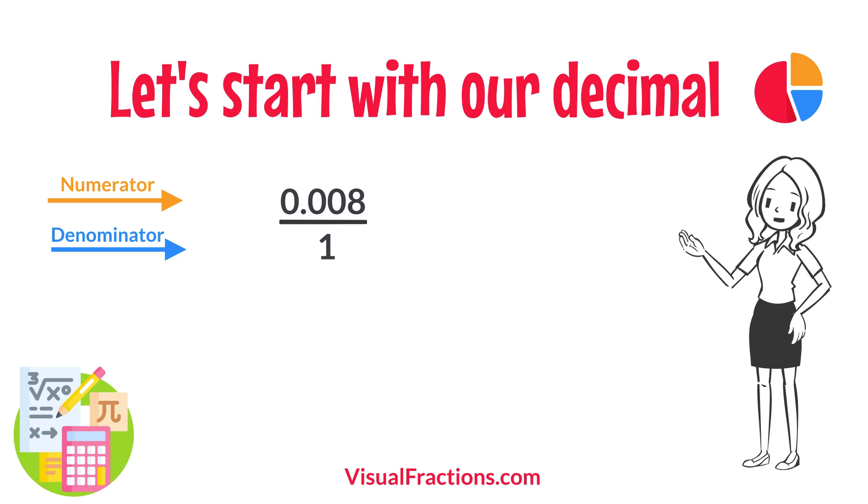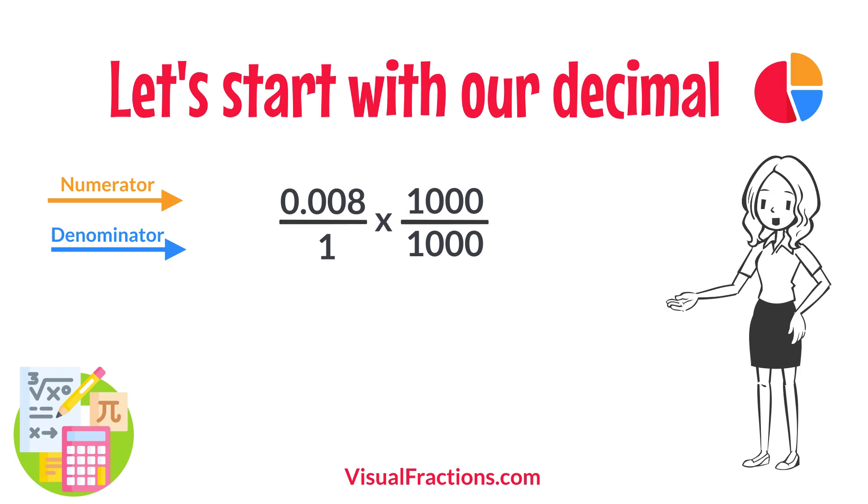This sets up the conversion process where we multiply both the numerator, the decimal, and the denominator, 1, by 1,000 because there are three decimal places.